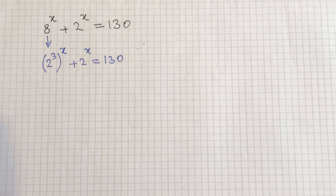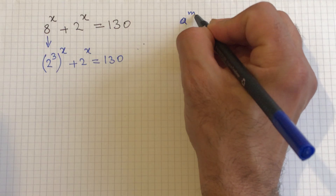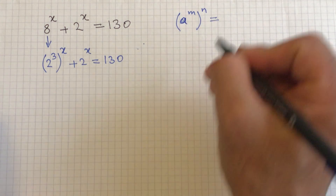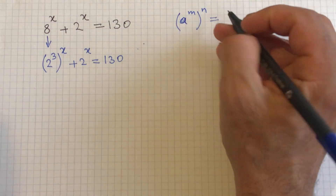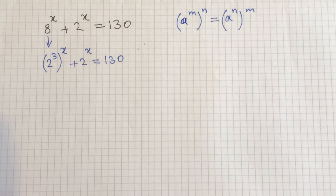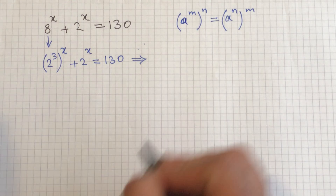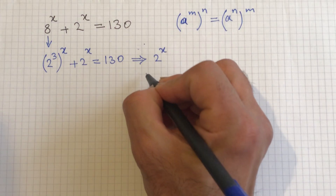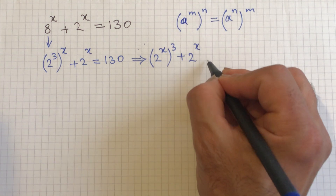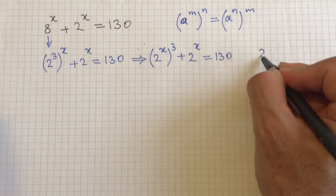From basic mathematical rules, if a to the power of m gets raised to another power of n, then you can write it as a to the power of n raised to the power of m — you can just exchange the powers. So this becomes 2 to the power of x, raised to the power of 3, plus 2 to the power of x, equals 130.